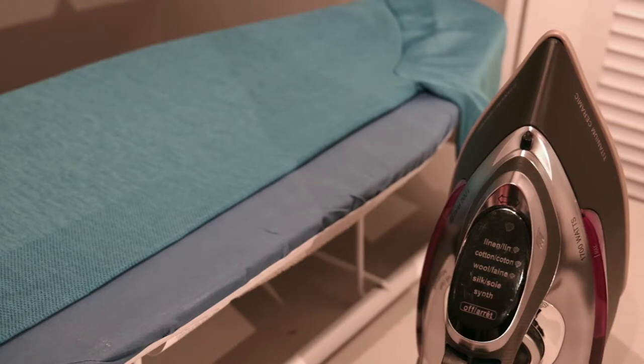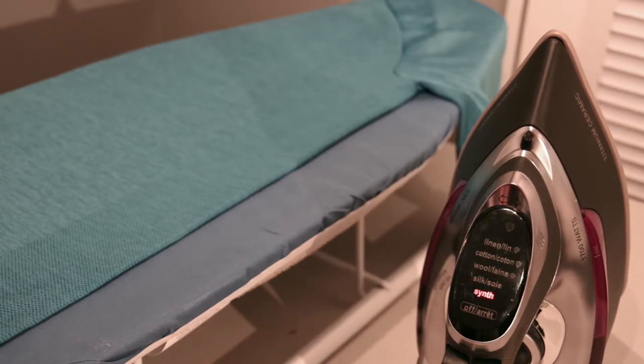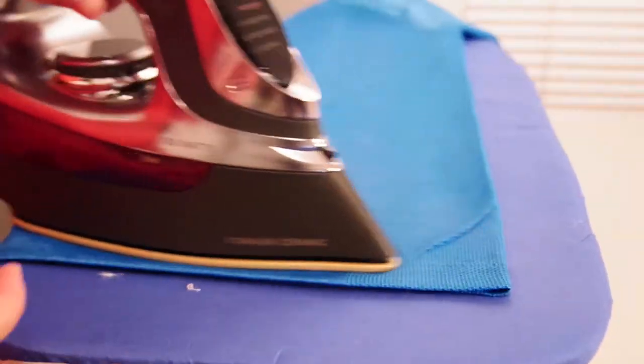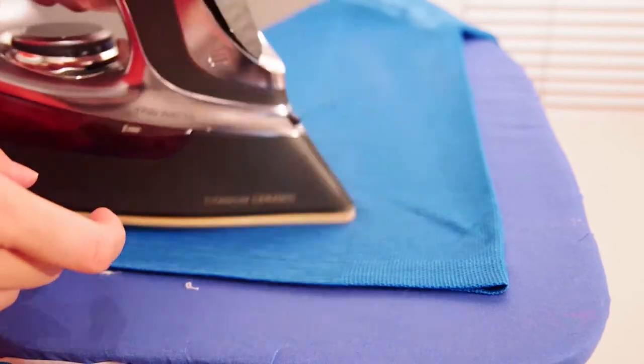Now, let's change the setting to synthetic to iron polyester material. It doesn't glide as easily at first, but once I got the technique down, it was easy.